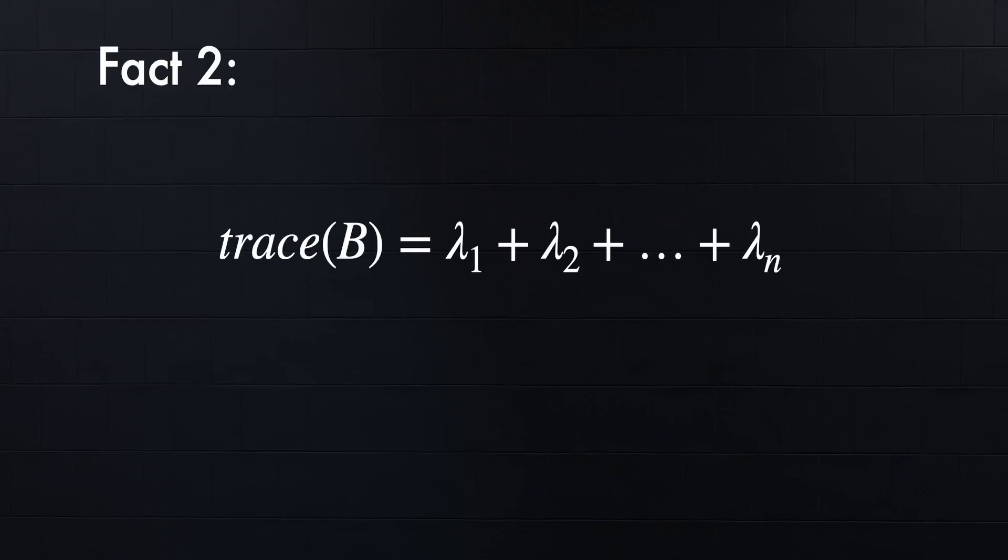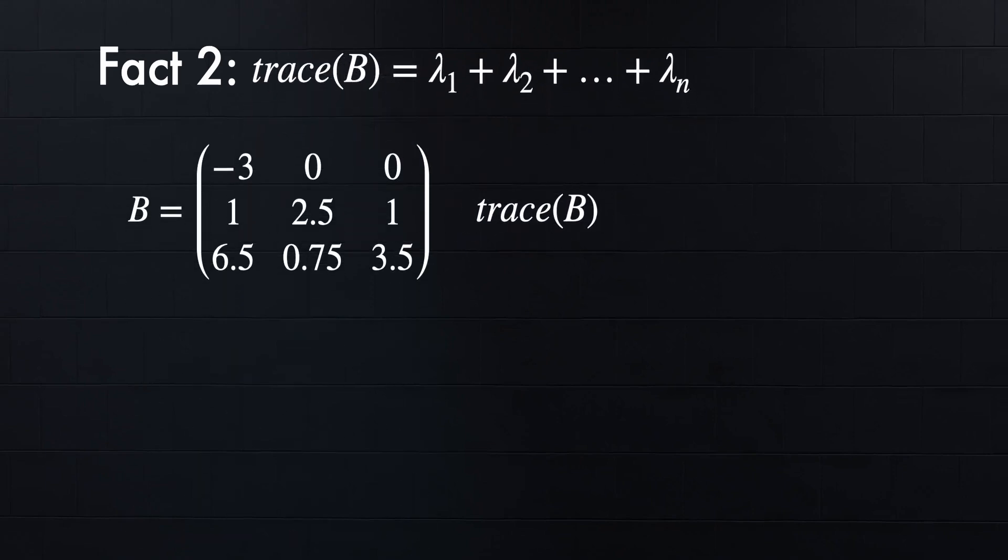Fact 2: The trace of a matrix equals the sum of all its eigenvalues. If we use a similar kind of logic to the determinants, we can see this process. So if we look at B as an example, we'll see the trace is just the sum of the values in its diagonal. And the eigenvalues for B are 4, -3, and 2. So if we add those together, we also get 3.